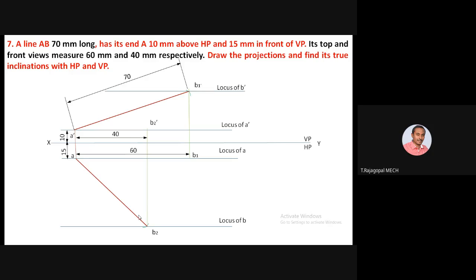Both true lengths in the front and top view are now completed. To find the front view: take A-dash as center, B2-dash as radius, draw an arc to cut the locus of B-dash to identify point B-dash. This gives the front view of 40 mm length. For the top view: take A as center, B1 as radius, draw an arc to cut the locus of B to identify point B. Join A and B — this is the top view of line AB.